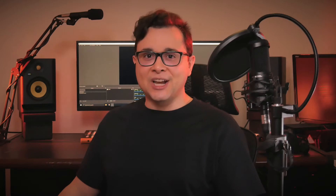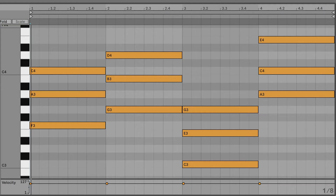Now if you begin that progression from the 4 chord but play the same loop, you end up with another different vibe just by changing the focus. It's a 4, 5, 1, 6 — like 'Rude' by Magic. In the key of C major, that would be F, G, C, A minor.